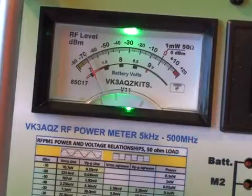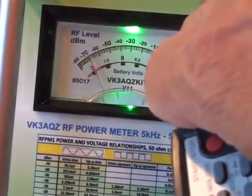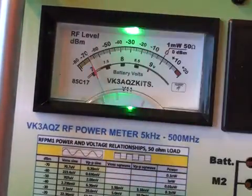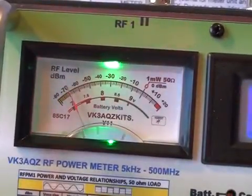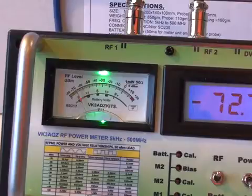The power handling ability of the meter is from around plus 16 dBm down to around minus 70 dBm. It's a range of 86 dB. The RF detector head will actually respond to signals below 5 kHz, however, the accuracy will fall away.